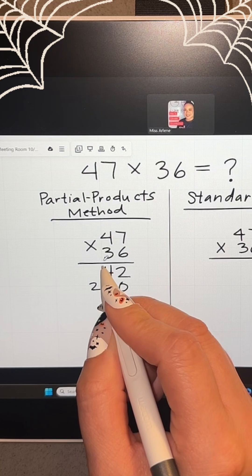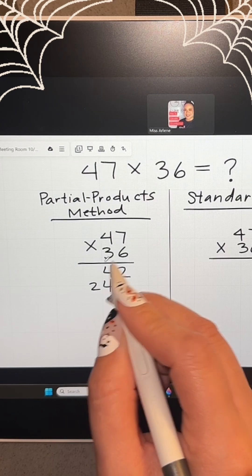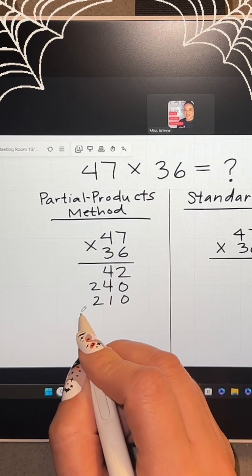Next, you're going to distribute the 3 from 36. Really, this represents 30. So 30 times 7 is 210. And 30 times 40 is 1,200.